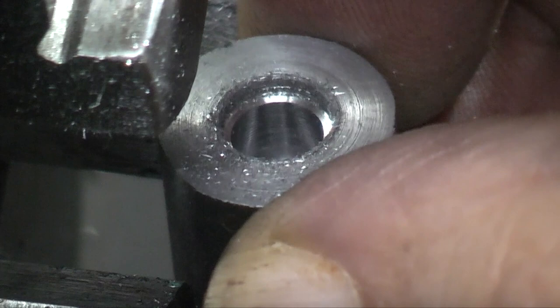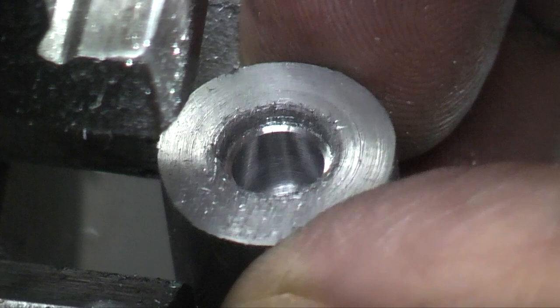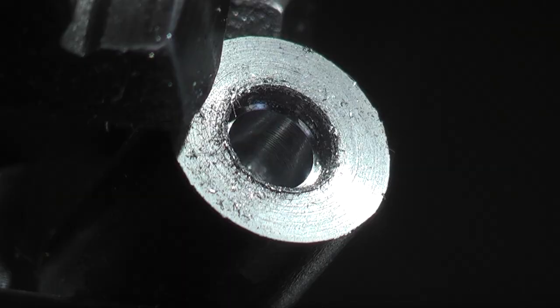Now the first part is just a recess and then it's the second part that I've bored out. You can see the finish on that is really good. Considering all I did was put the cutter in a Jacob's chuck in the tail stock and fed it in by hand.